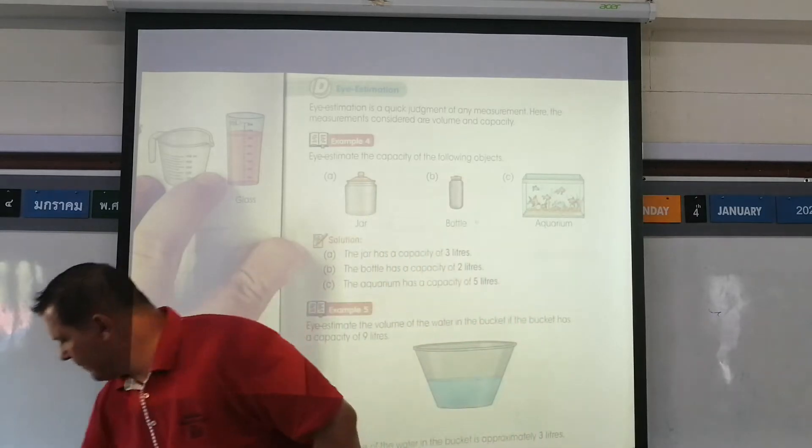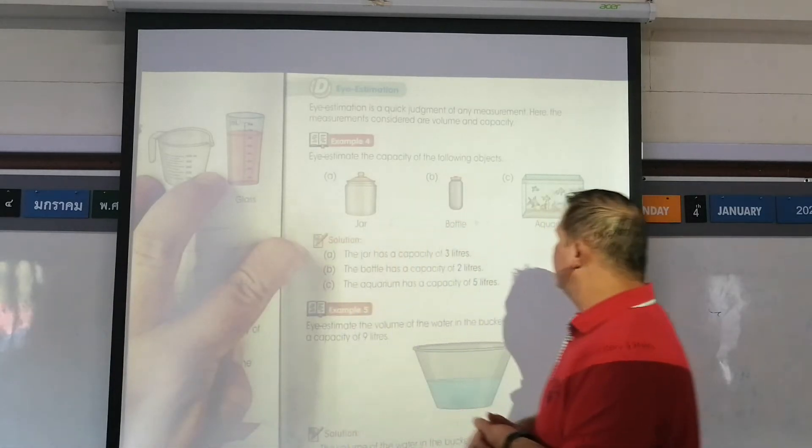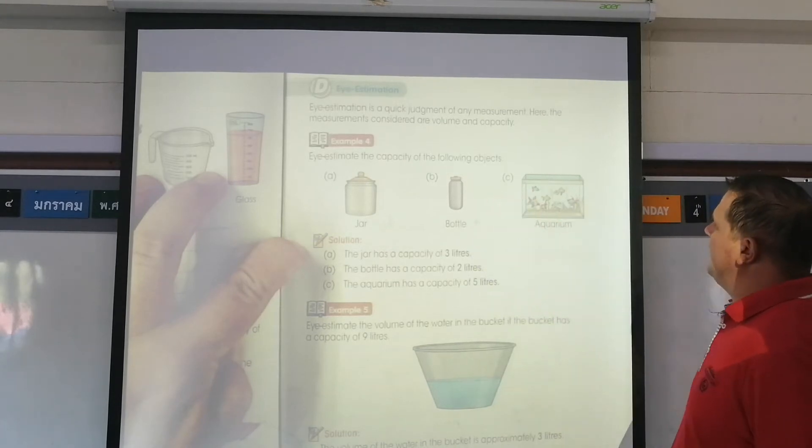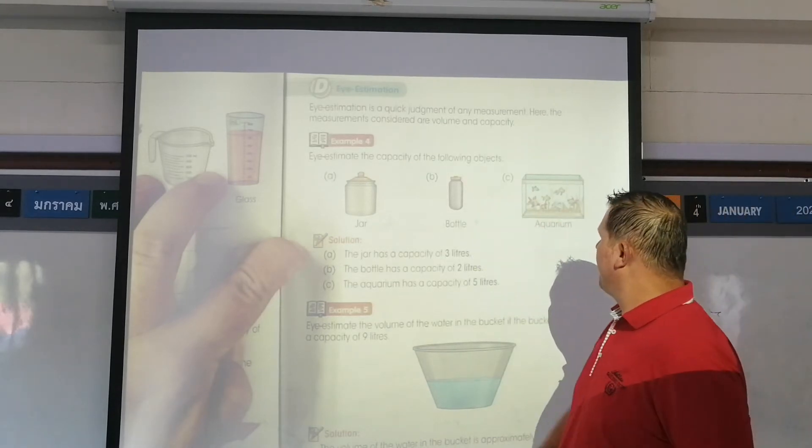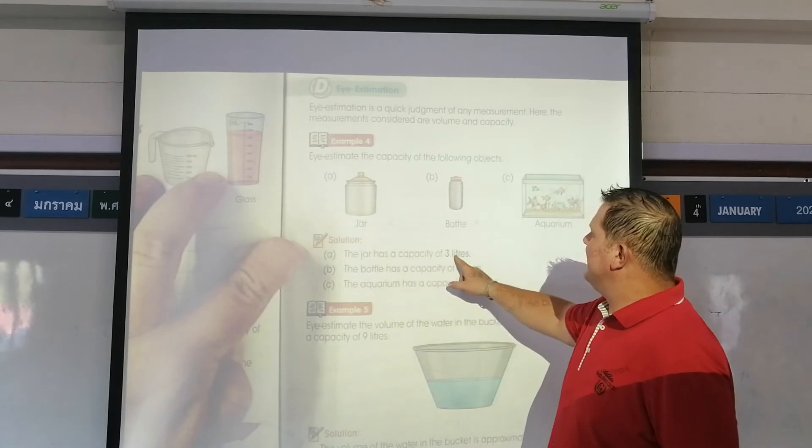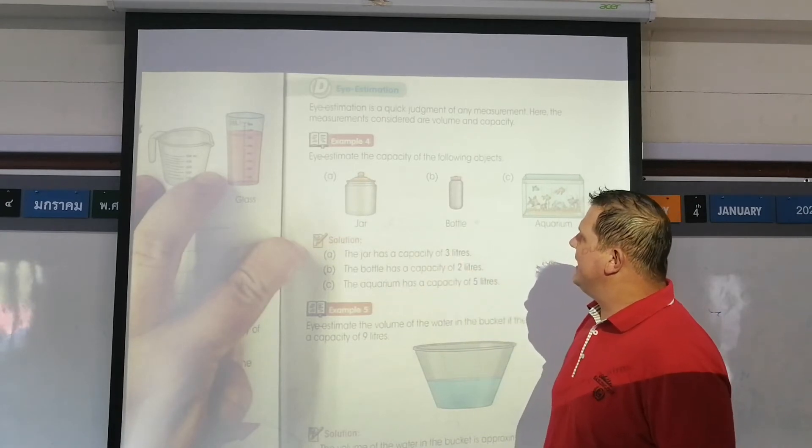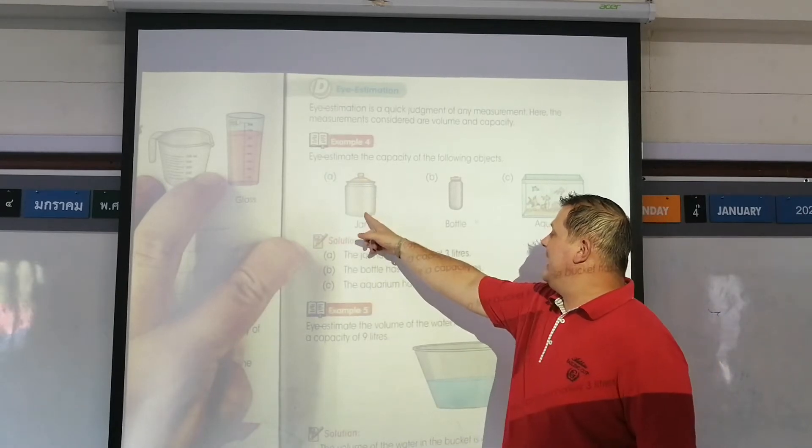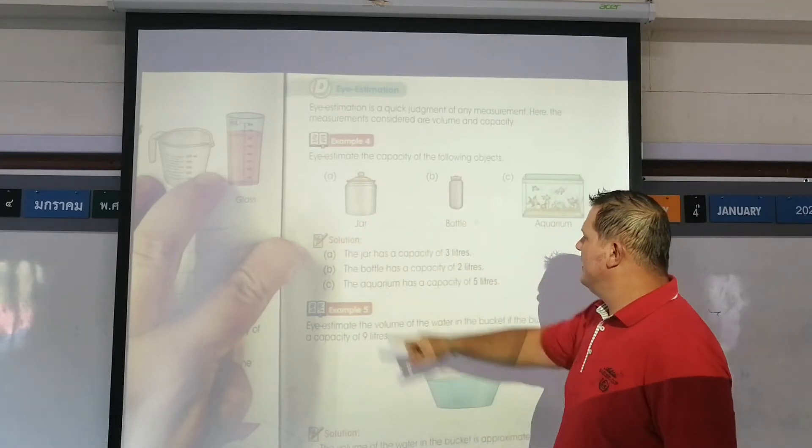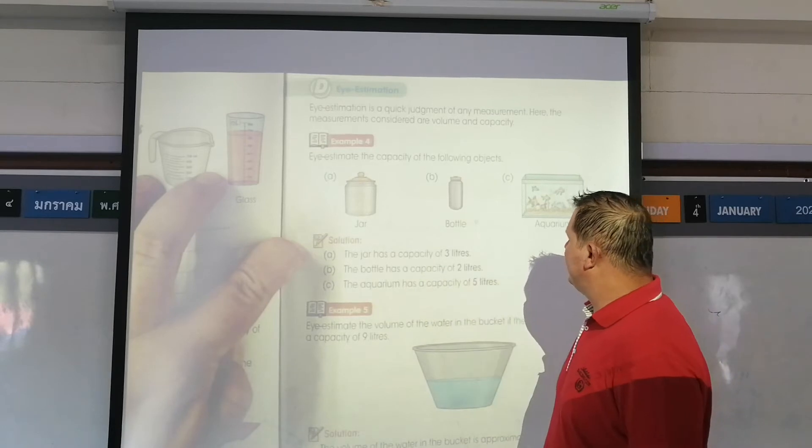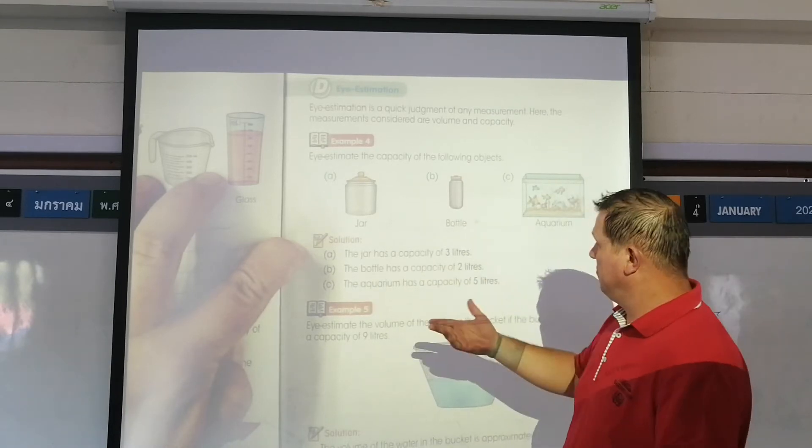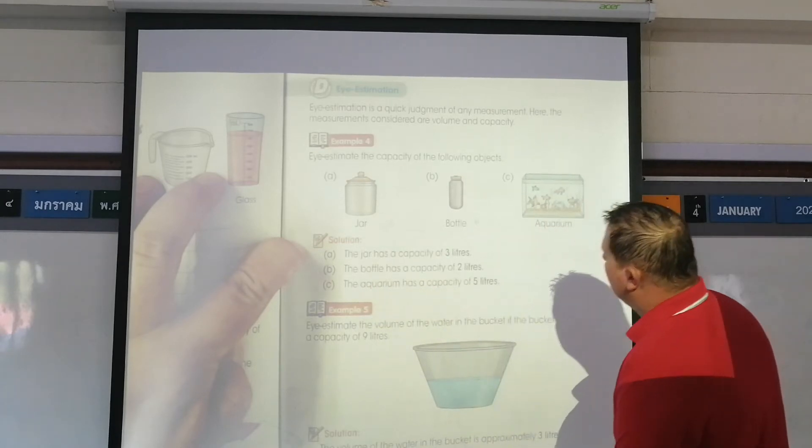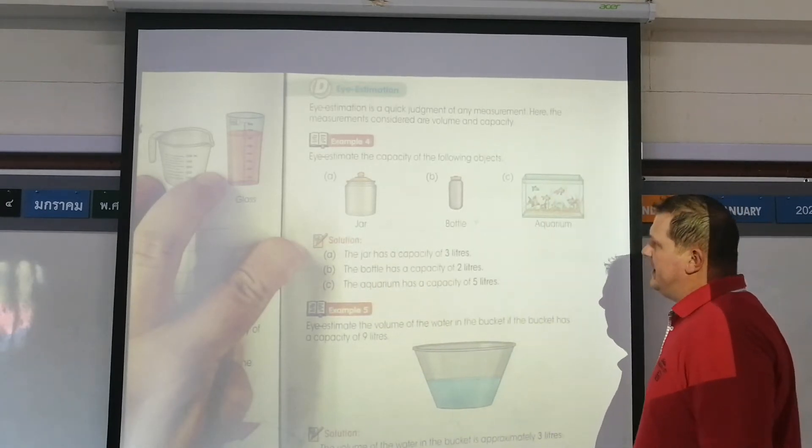I estimate the capacity of the following objects. The jar has a capacity of three liters. If that's about three liters, then how much is this going to be? The bottle has a capacity of two liters, and the aquarium has a capacity of five liters. Makes sense, right?